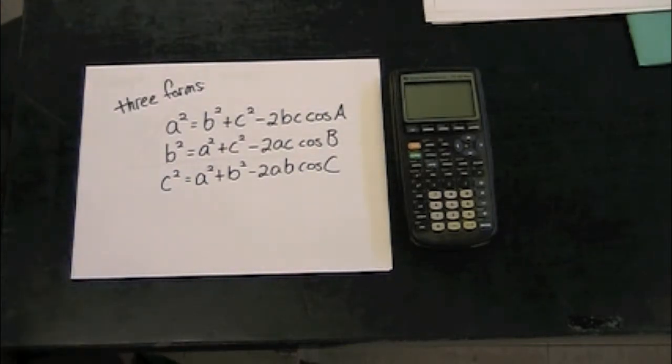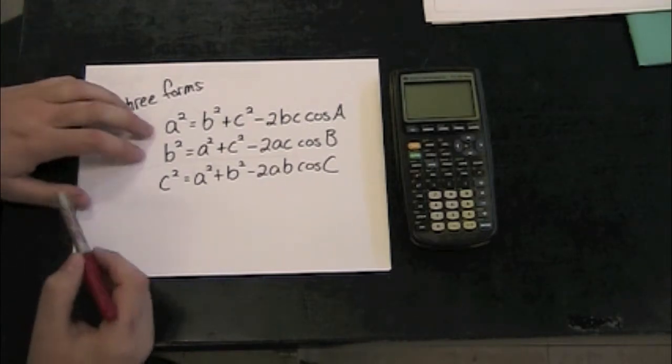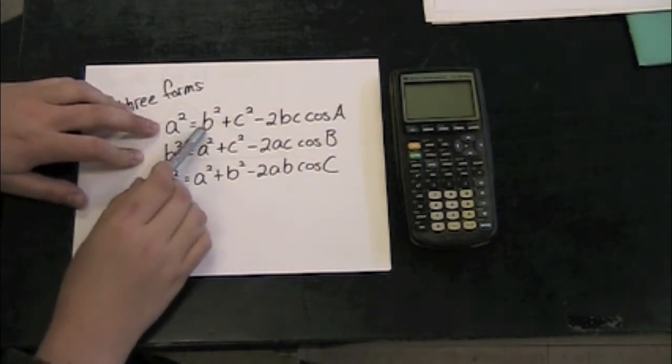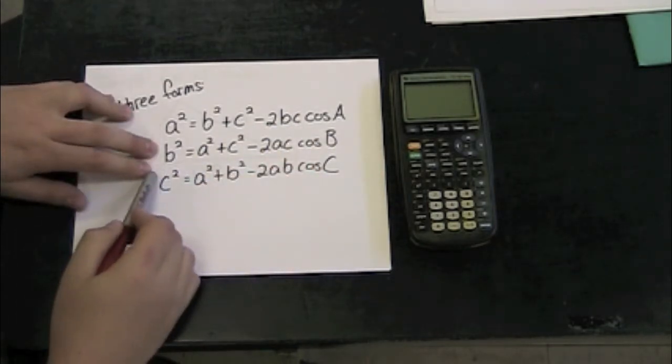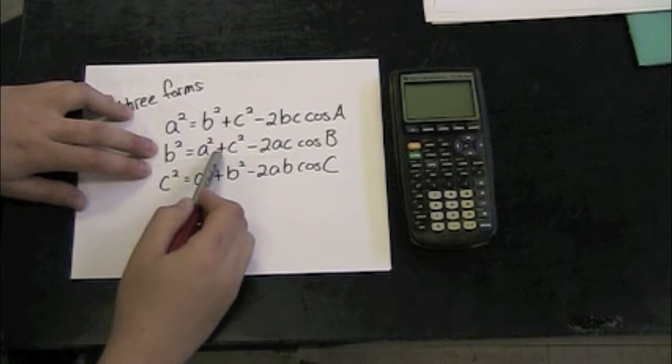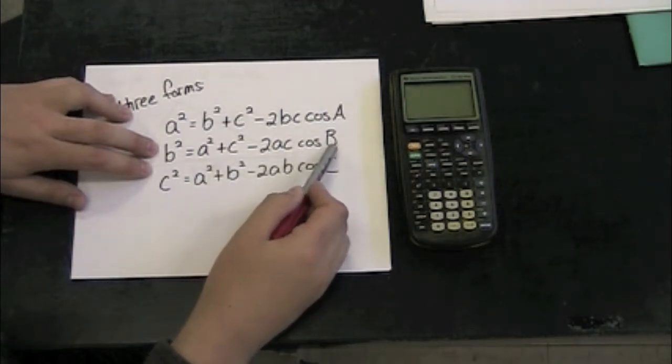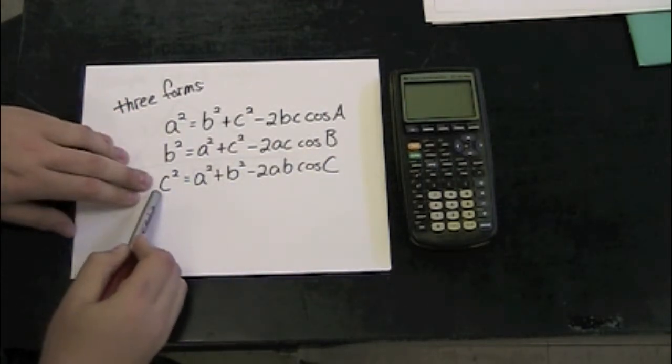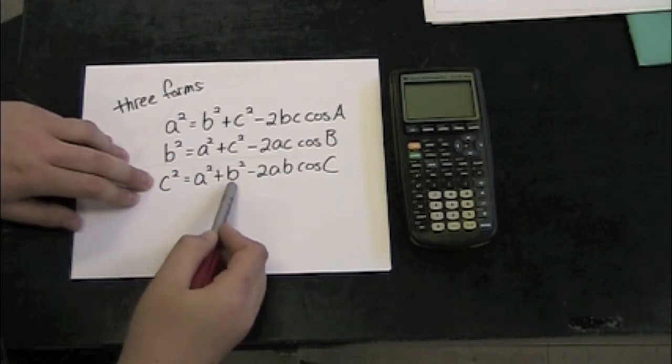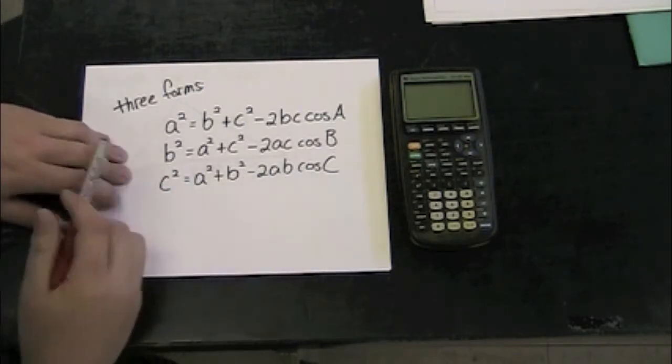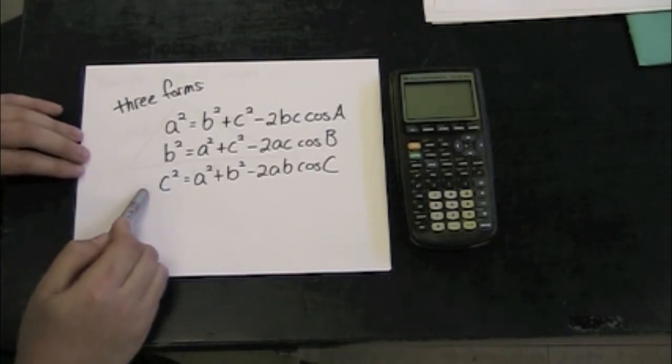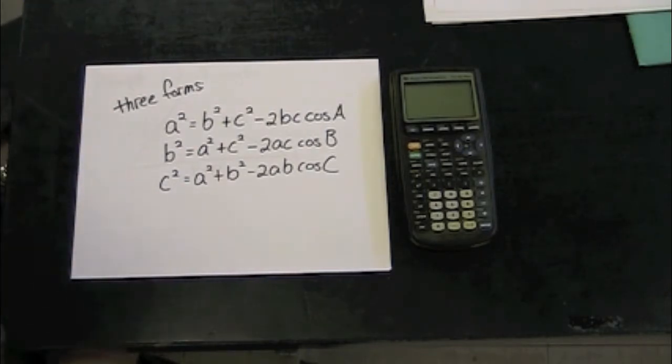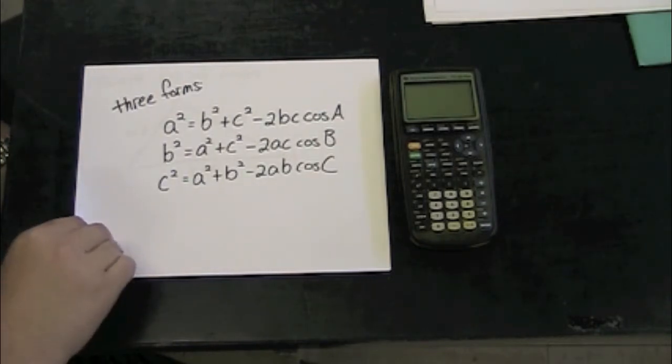We can see the law of cosines in three different forms based on what part of the triangle we're looking at. We can look at a² = b² + c² - 2bc cos A. We can look at it as b² = a² + c² - 2ac cos B. Or as c² = a² + b² - 2ab cos C. All three of these are essentially the same, but depending on how your triangle is labeled, it might be easier to use one or the other for you.